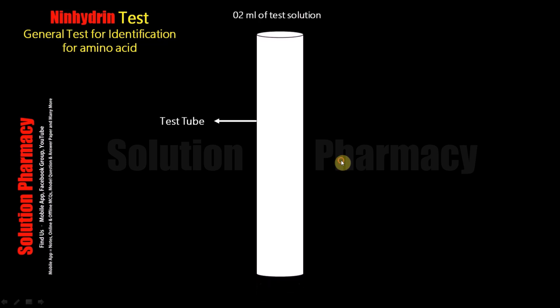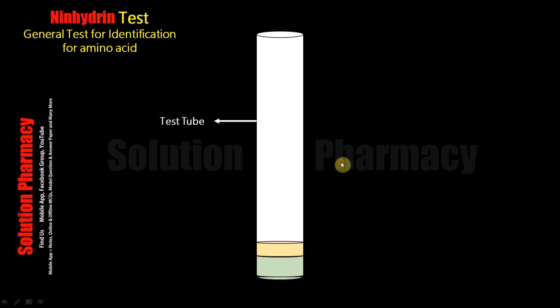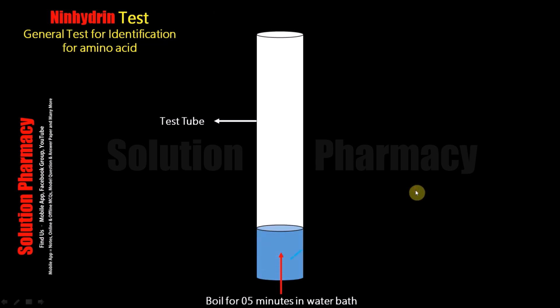First of all, take a test tube and add 2 ml of test solution in which we have to identify the amino acid. After this, add 1 ml of ninhydrin solution into the test tube with the help of a pipette, and then properly mix the contents of the test tube. Then boil the contents of the test tube for 5 minutes in the water bath. If the color of the contents changes to dark blue or deep purple color, it means alpha amino acid is present in our sample.